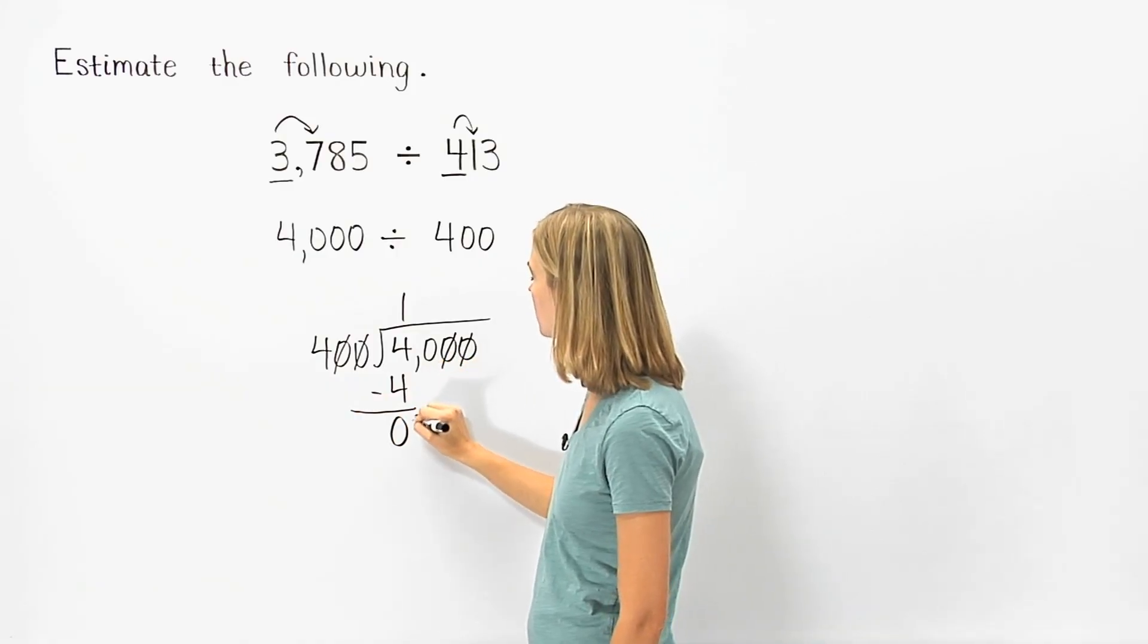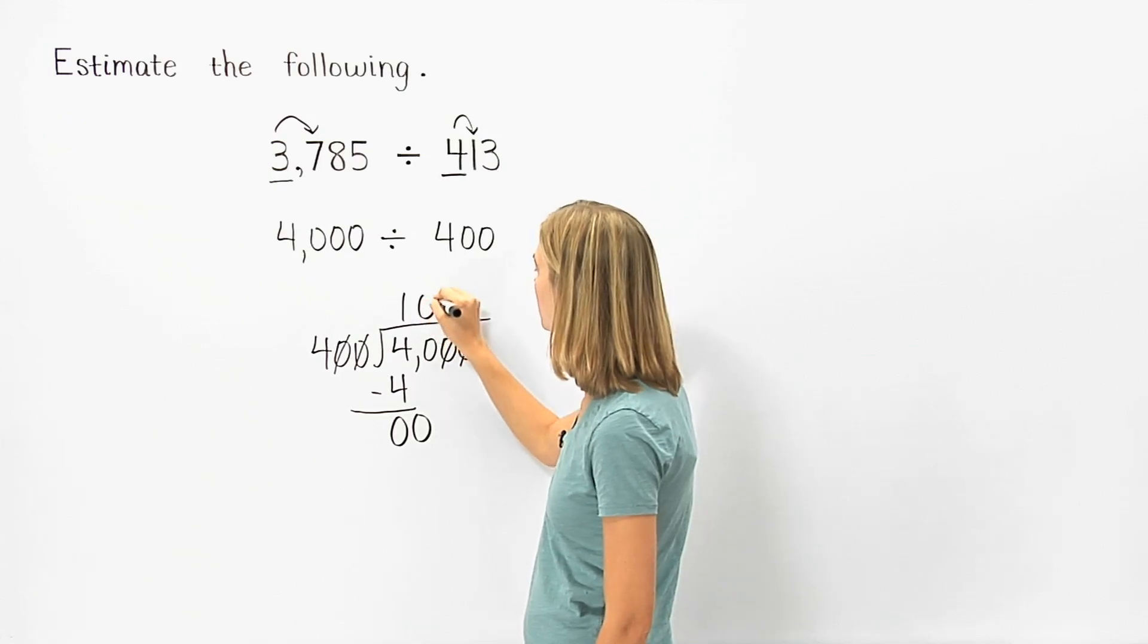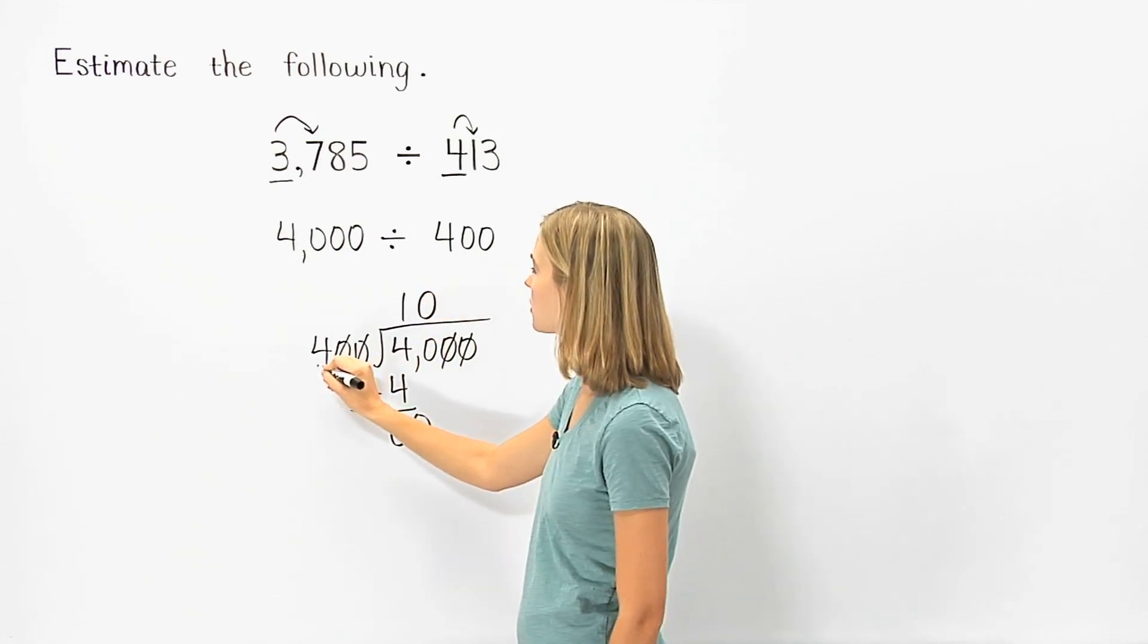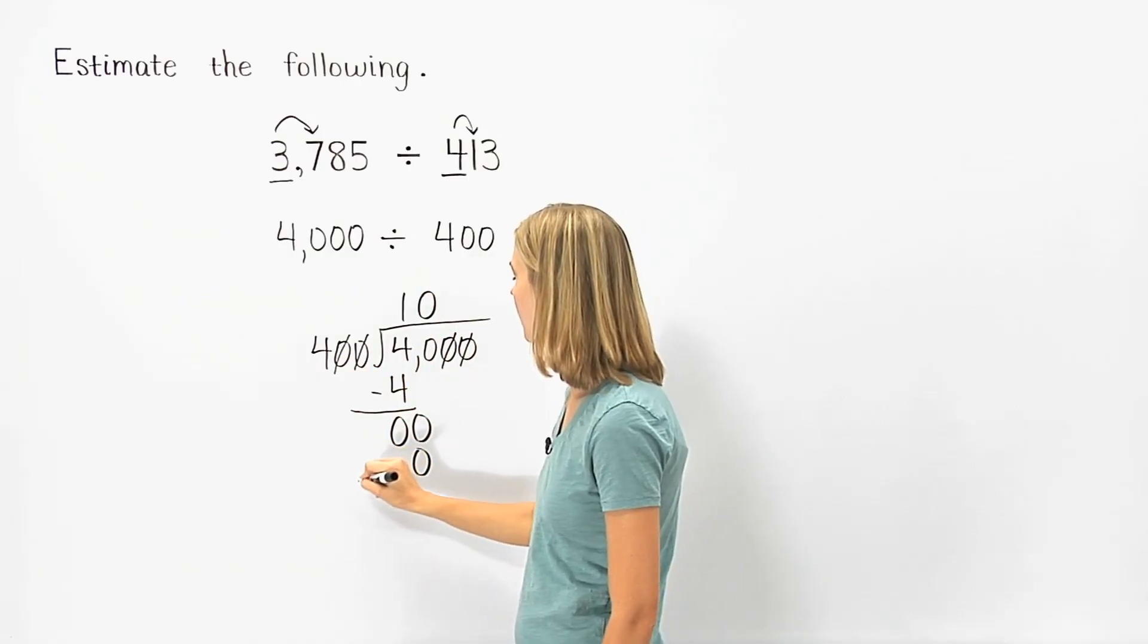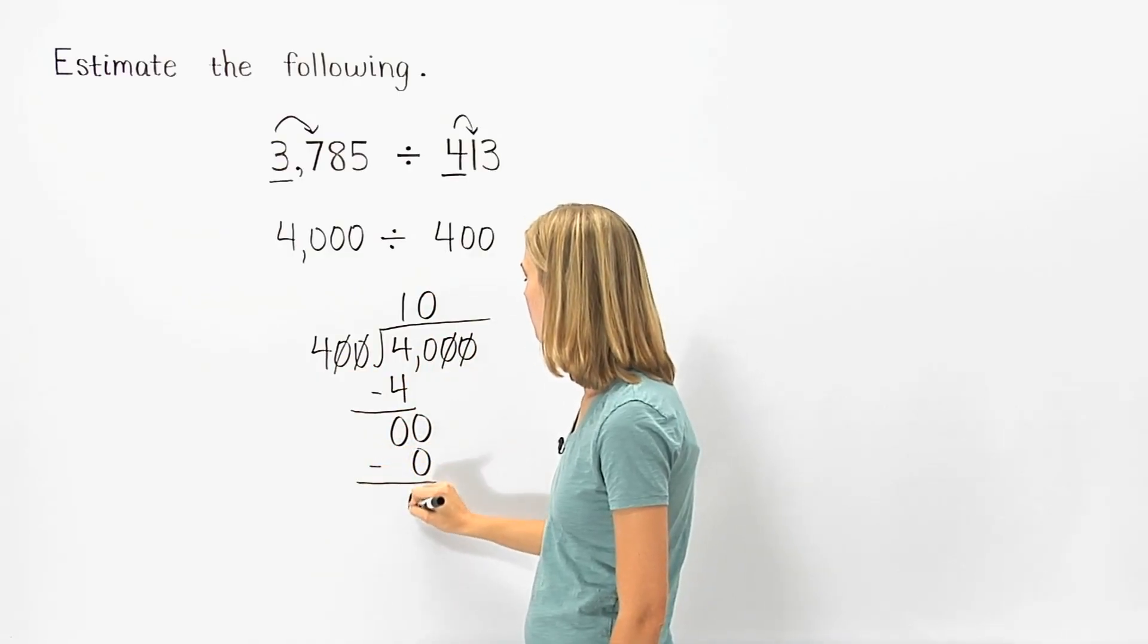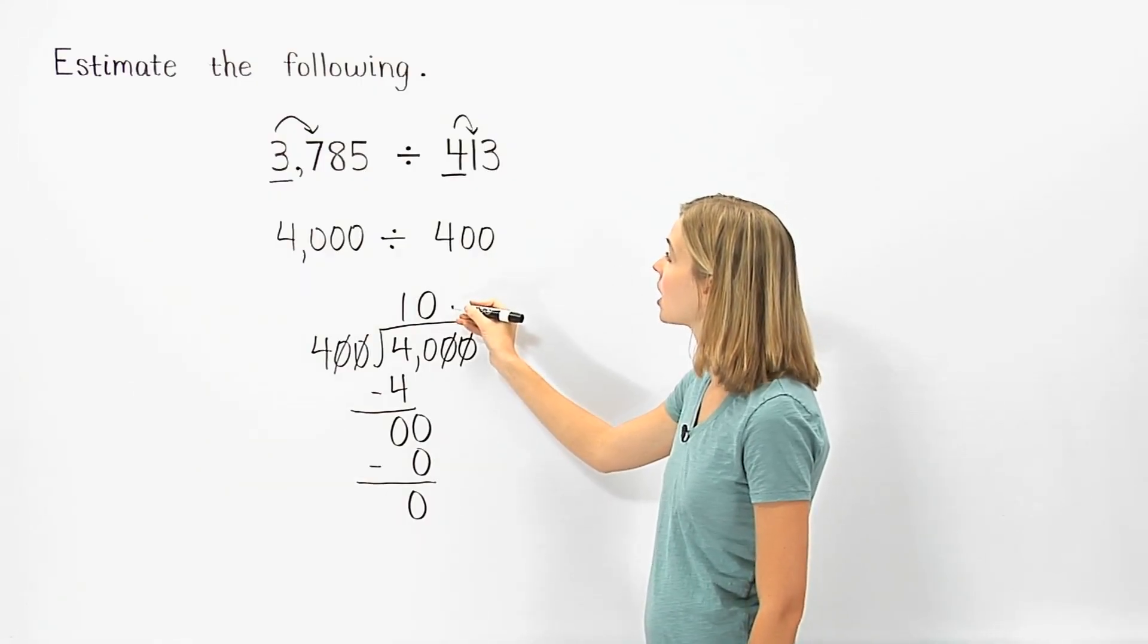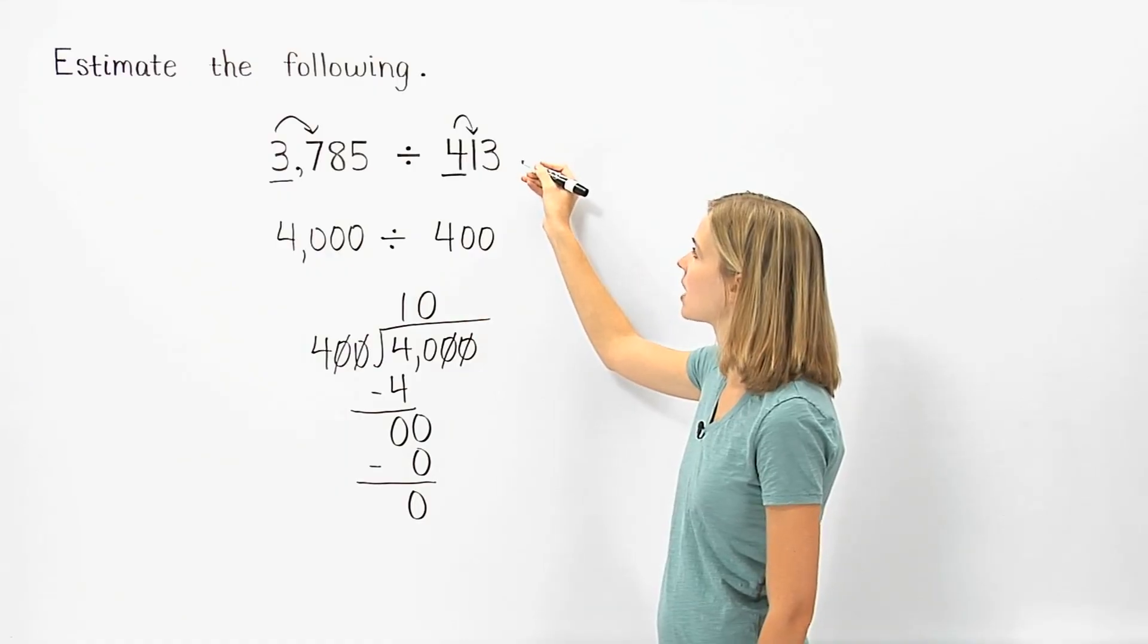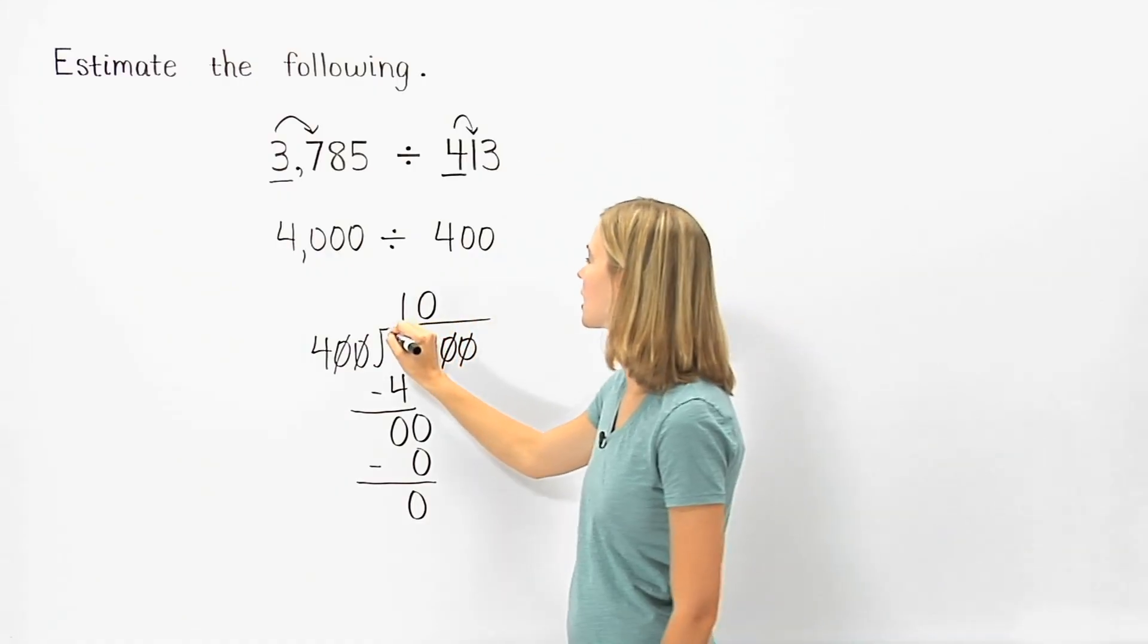So 4,000 divided by 400 is 10, which means that 3,785 divided by 413 is approximately 10.